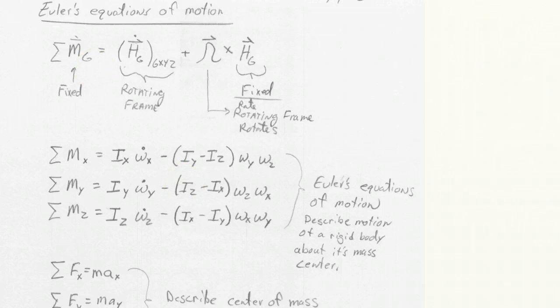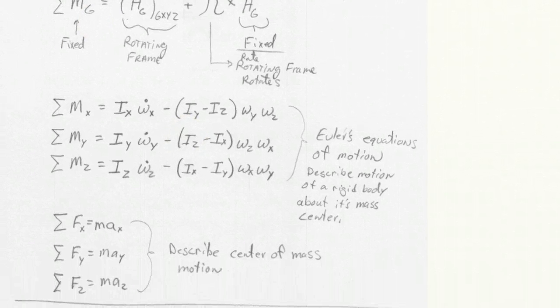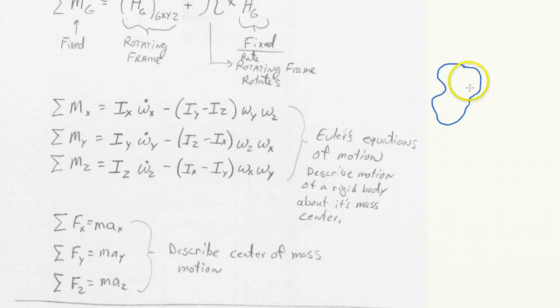And then these, at the bottom here, we've got the basic f equals ma equations, which describe the center of mass motion. So, if we have some rigid body in three dimensions, so it's going through space, moving,